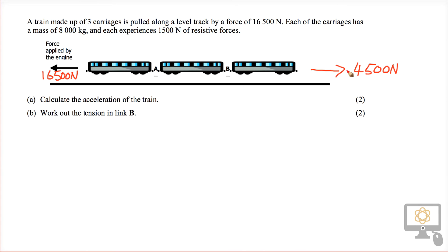What we're going to do in this problem is first consider the system as a whole to help us solve the first question, calculate the acceleration of the train, and then we're going to look particularly at carriage B, or at least this back carriage with tension connected at link B.